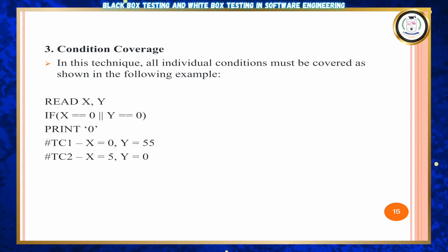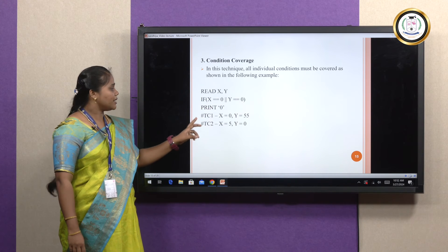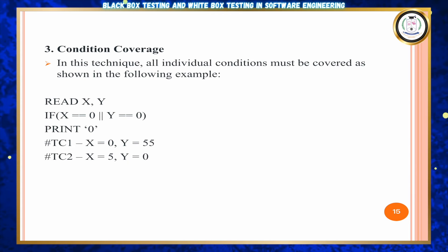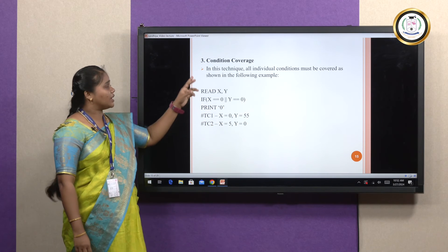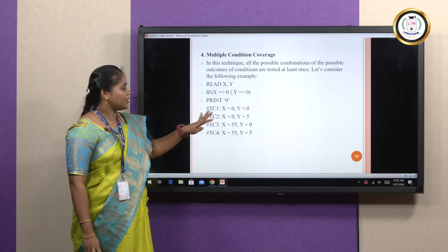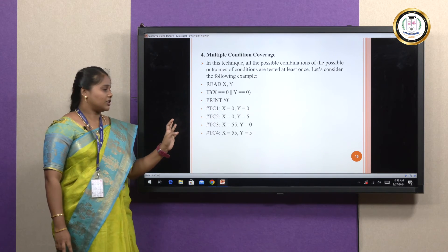Next, condition coverage. Condition coverage requires that all individual conditions be covered at least once. For example, if X equals 0 or Y equals 0, any one true statement will print 0. So X=0, Y=55 gives output 0, or X=5, Y=0 gives output 0. Next, multiple condition coverage: both X=0 and Y=0 conditions are tested together to find four different test cases and verify the correct output.